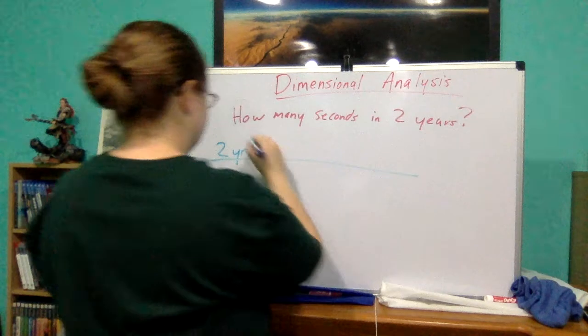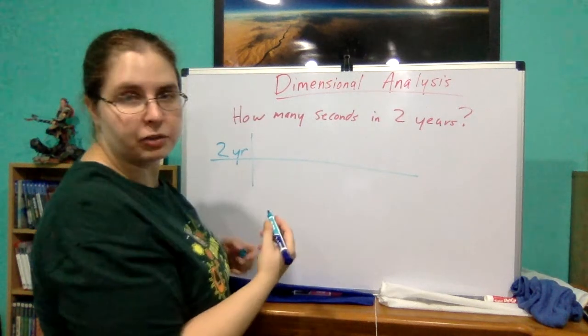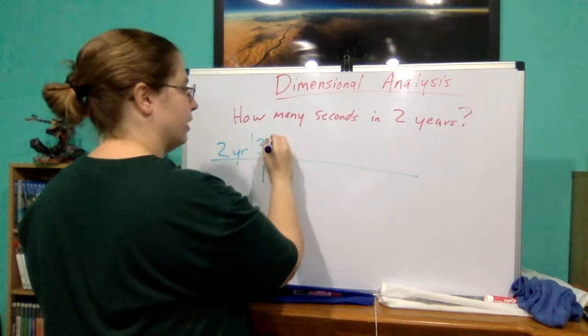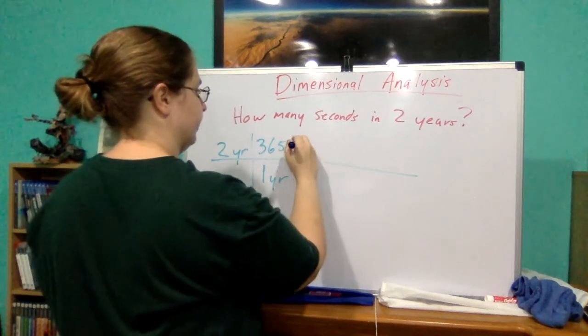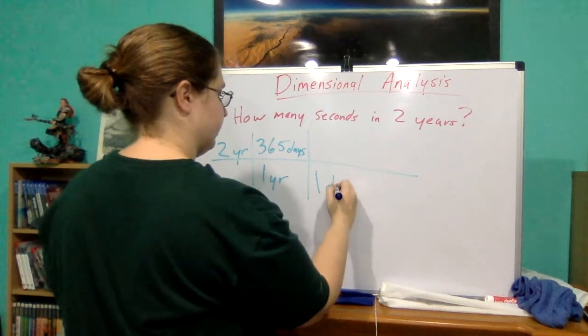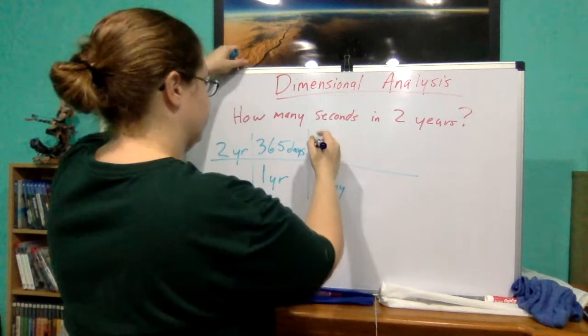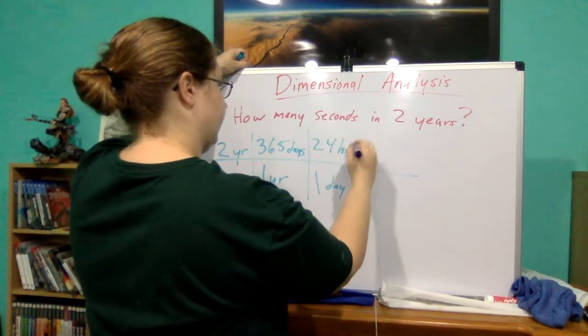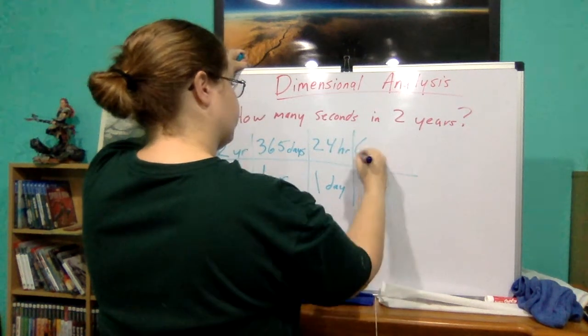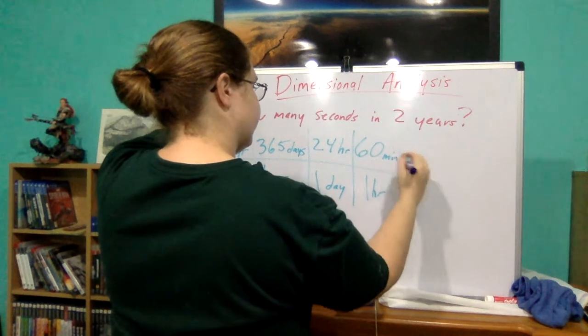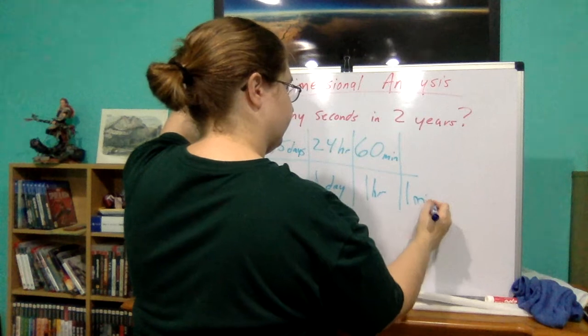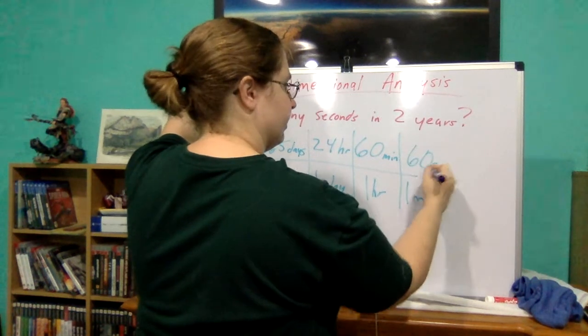Alright. Well, I know I've got to cancel that out. So, one year is equal to 365 days. One day is equal to 24 hours. One hour is equal to 60 minutes. One minute is equal to 60 seconds.